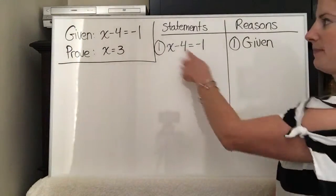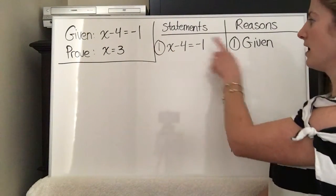So as you can see, the first step is our given, x minus 4 equals negative 1, and the reason is given.